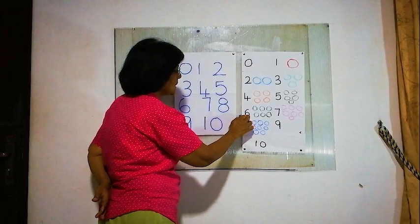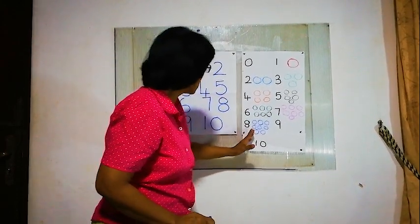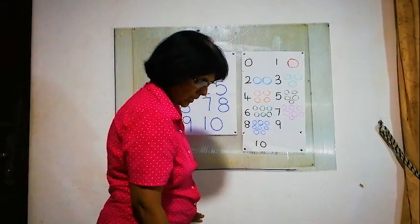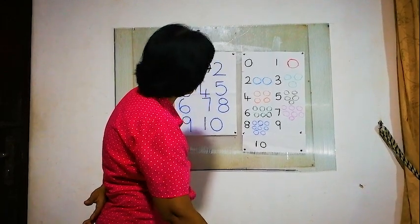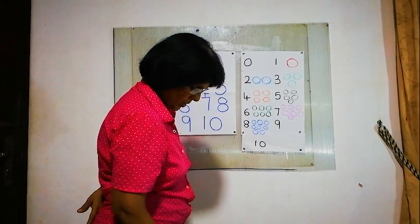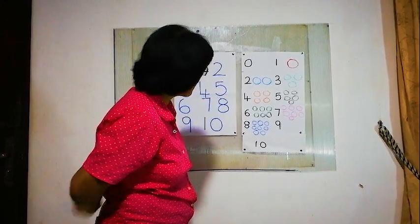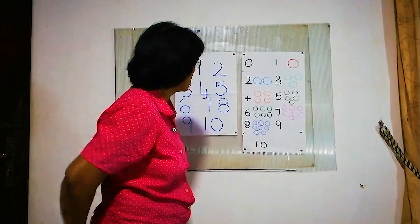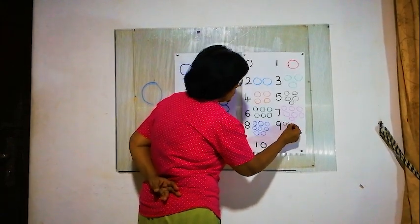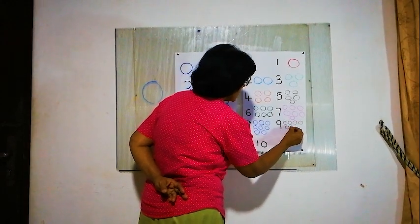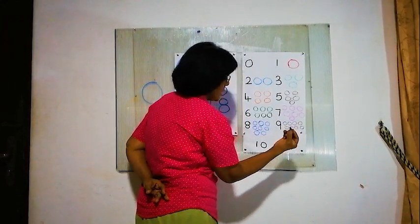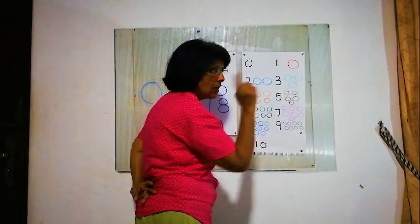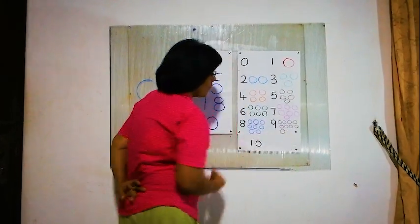Like that, we have to find the correct number and correct values. We have to draw correctly, otherwise it is wrong. Now, pictures for number 9. We'll draw 1, 2, 3, 4, 5, 6, 7, 8 — and one more. Now it is 9 — 9 balls.